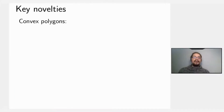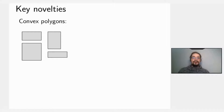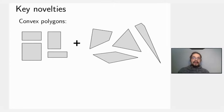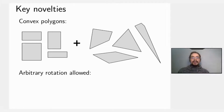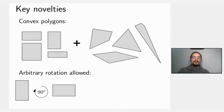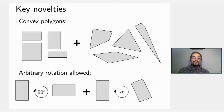Let's highlight the key novelties of this work. The first important novelty is that we consider convex polygons — not only axis-parallel rectangles, which were the only polygons considered before, but any given convex polygon. The other key novelty is that we allow for arbitrary rotation; previous work had only considered 90-degree rotations, but we consider rotations by any given angle.